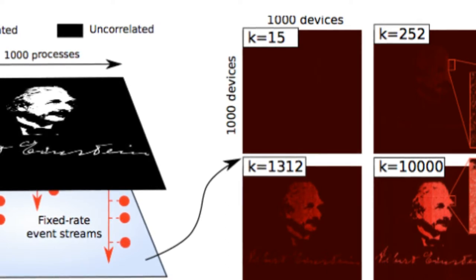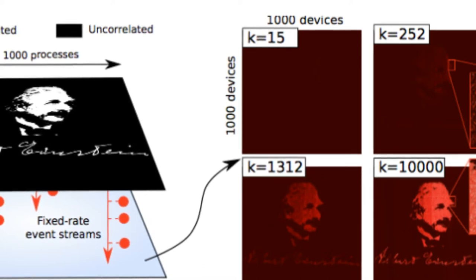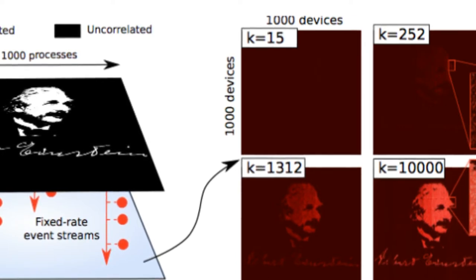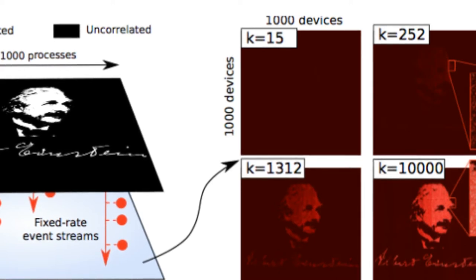It sounds good in principle, but does it work? To find out, the research team put together a synthetic data set, where some points had a slight correlation over time. Arranged as a grid, these correlations created a bitmap image of Alan Turing and Albert Einstein.